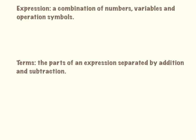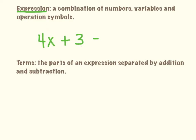Before we start solving order of operations problems, let me give you a couple of key definitions. The first one is called an expression. An expression is a combination of numbers, variables, and operation symbols. For example: 4x plus 3 minus 2 is an expression. Or maybe 3x squared minus 2, or 4 plus 7 — those are all expressions.